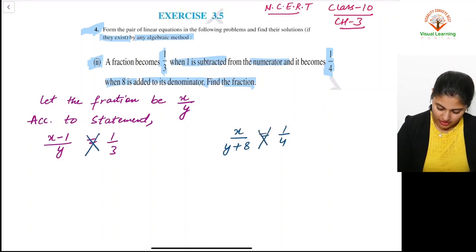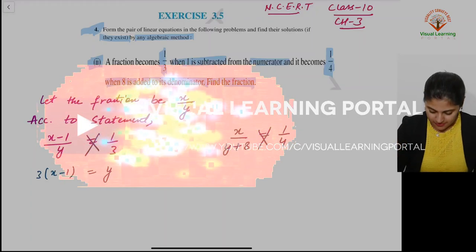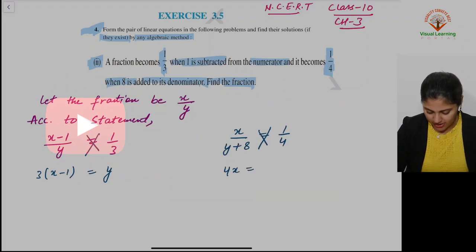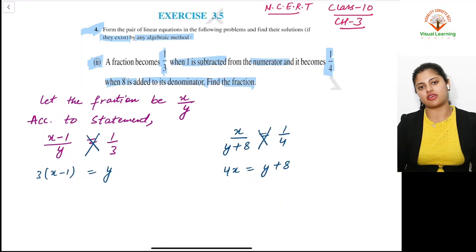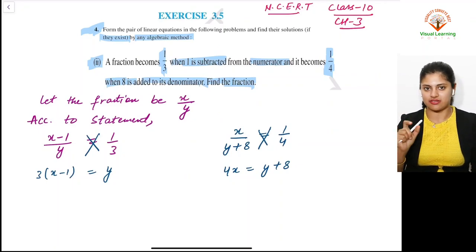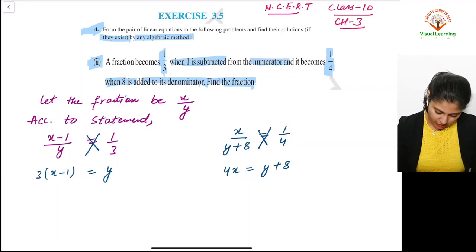Cross multiply to solve the equations. Multiply 3 with (x-1) and y with 1: 3(x-1) = y. So 3x - 3 = y. Similarly, 4x = y + 8. When you multiply anything by 1, the answer remains the same.